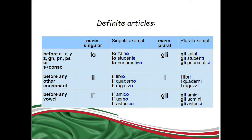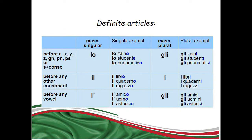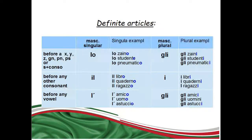First, I will start with the masculine gender of the definite article. LO is used before a masculine singular noun starting with these letters: X, Y, Z, GN, PS, or S plus another consonant.